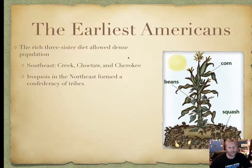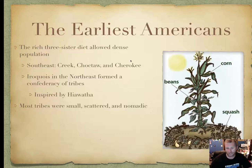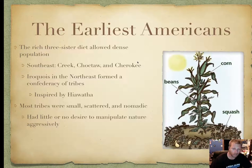You have the Iroquois in the Northeast, who had formed a Confederacy of Tribes with big lodge cabins. They were inspired by a guy named Hiawatha. Most tribes were small, scattered, and nomadic, meaning they moved around following the game. They had little or no desire to manipulate nature aggressively — they lived in harmony with nature.